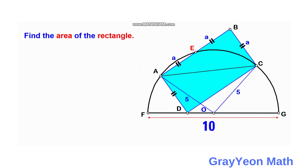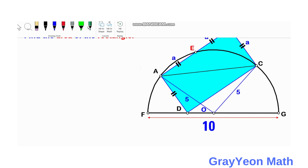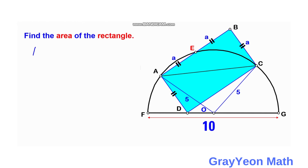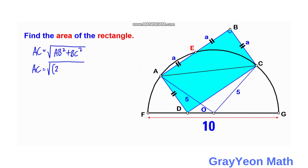Next, we focus on the diagonal AC. The diagonal AC is equal to the square root of the sum of the squares of its legs, since this rectangle forms a right triangle with diagonal AC against the two sides AB and BC. AB is equal to 2a and BC is equal to a.